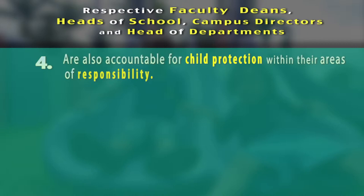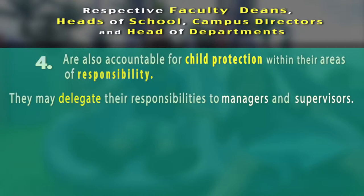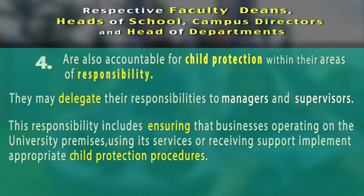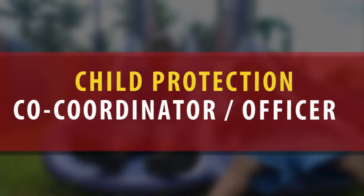Number four: they are also accountable for child protection within their areas of responsibility. They may delegate their responsibilities to managers and supervisors. This responsibility includes ensuring that businesses operating on the university premises, using its services, or receiving support, implement appropriate child protection procedures.